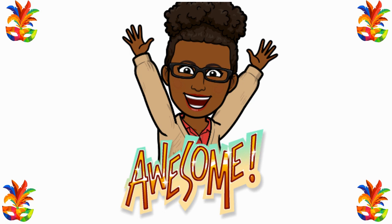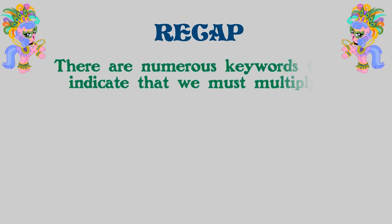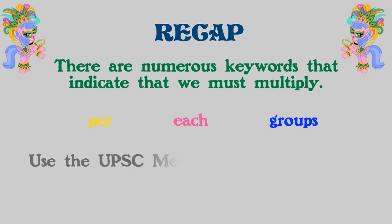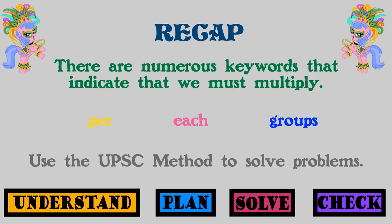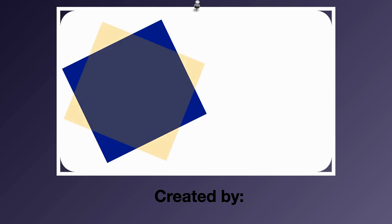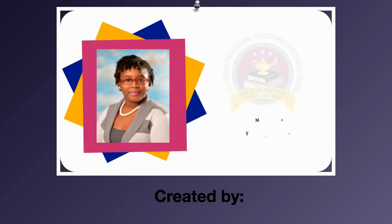You did an awesome job today, guys — give yourself a round of applause! Let's do a quick recap: there are numerous keywords that indicate that we must multiply, and when we have word problems we know we can use the UPSC method — Understand, Plan, Solve, and Check. Awesome job, guys! Thank you for watching. This lesson was created by Miss Antonia Bain.